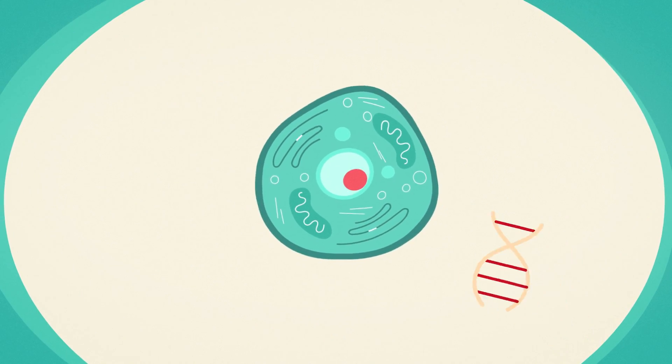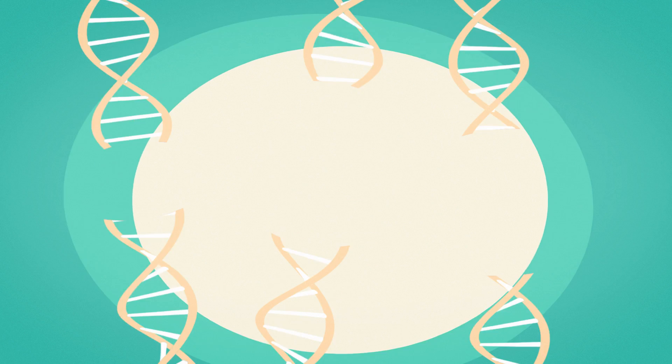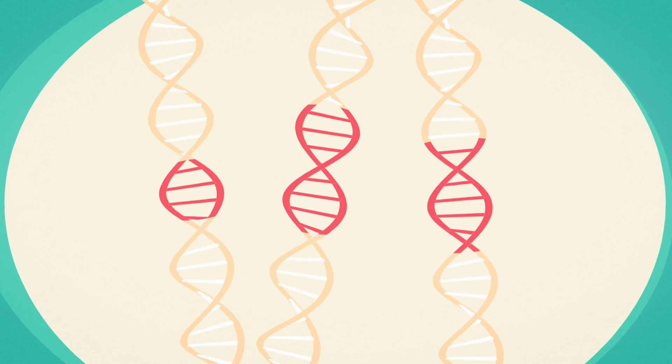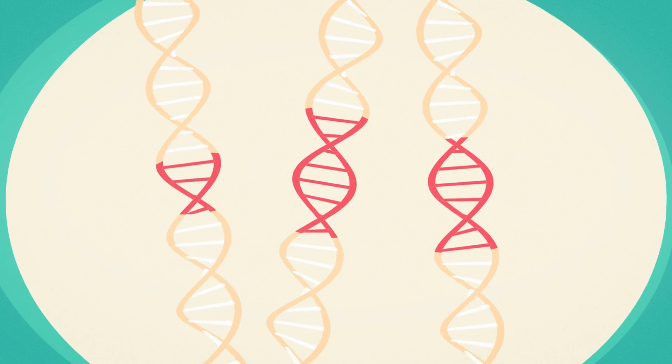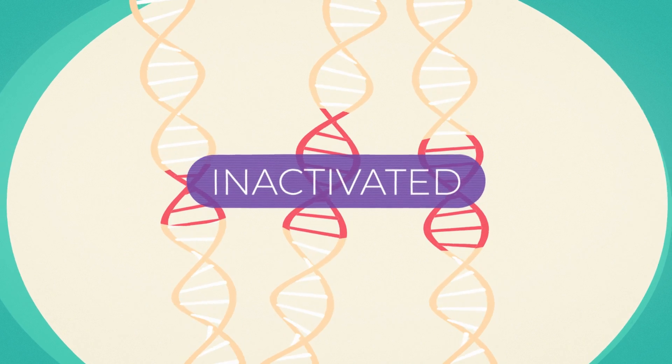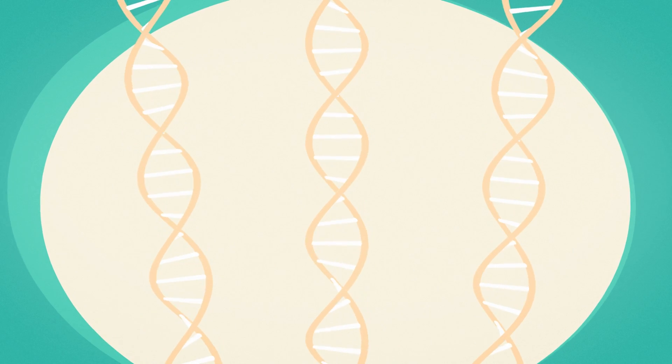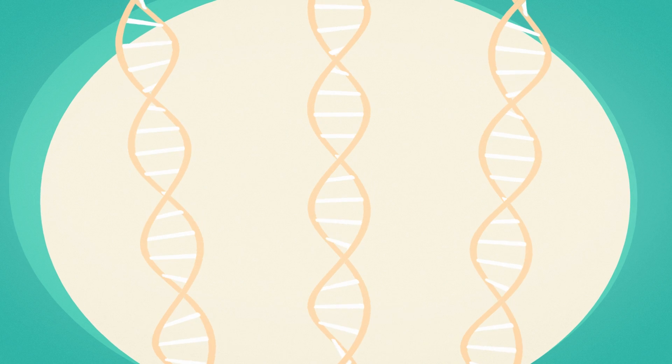The cell desperately attempts to mend the severed pieces. The break will be repaired, but if the repair pathway makes a mistake, the gene can be inactivated. Then it's time for a new assignment and a new CRISPR.